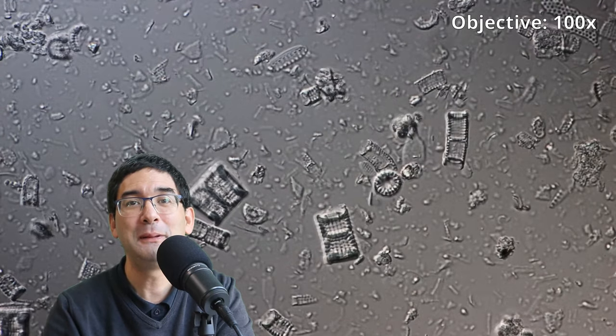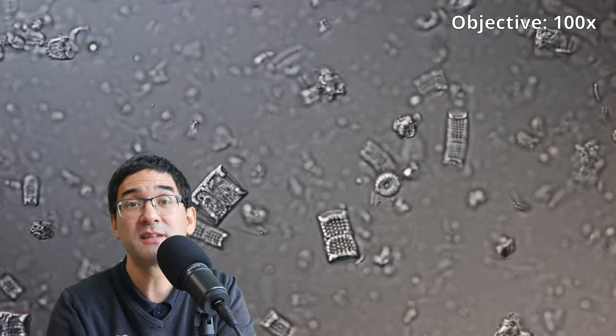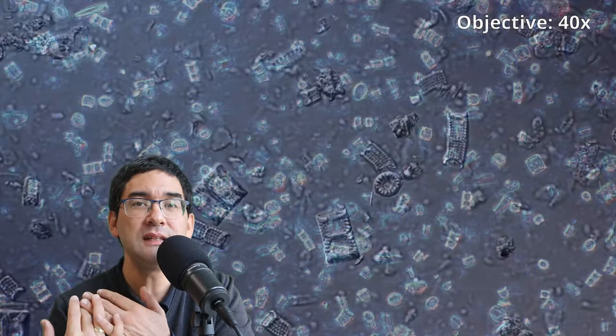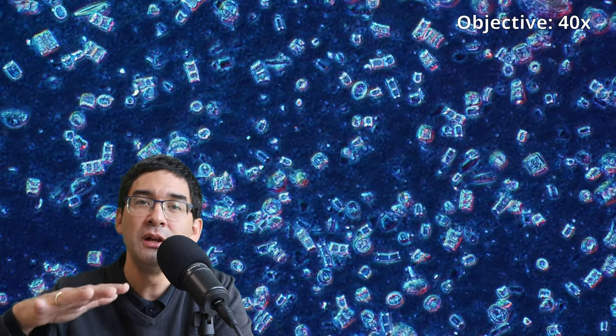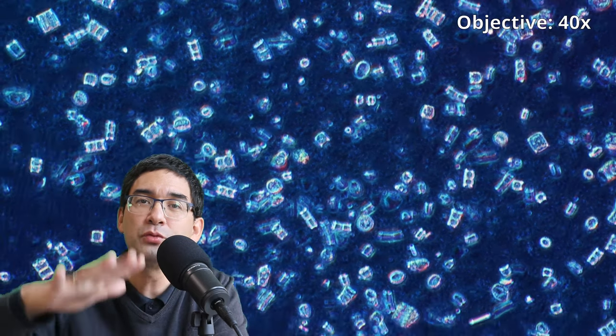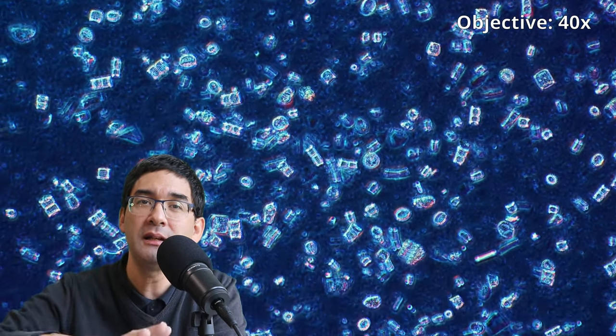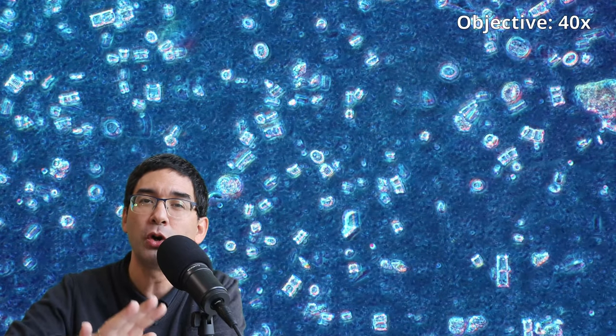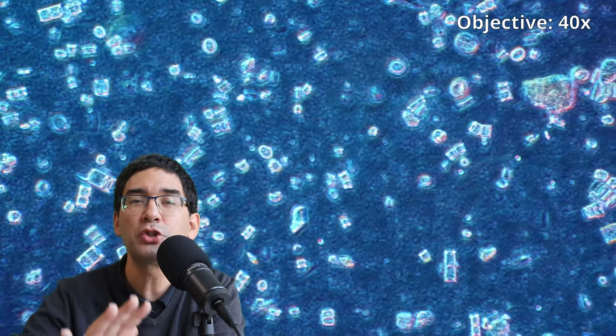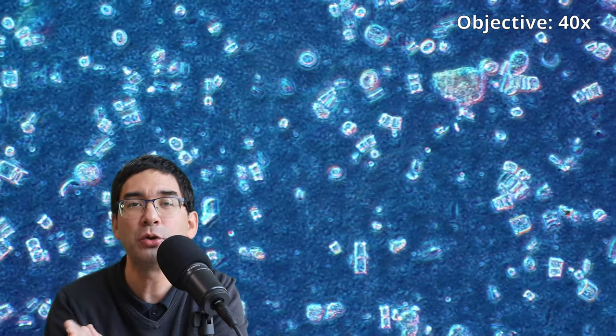And now you might wonder a little bit why the diatoms are that small. And I think one of the reasons is that many of them probably have already broken down because over the course of Earth's history, there's a lot of pressure and the diatomaceous earth is not really loose, but it's really compressed. It's very hard. And I can imagine this pressure also destroyed, especially the larger diatoms.